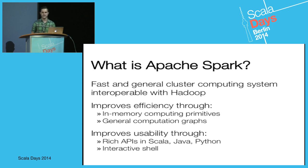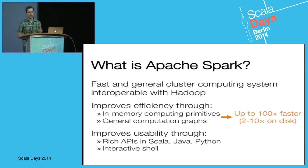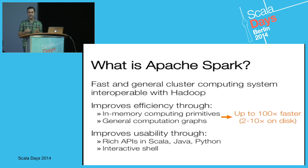The key difference, in contrast to Hadoop, is we've improved efficiency by leveraging in-memory computation primitives. This means it can actually be up to 100 times faster than typical Hadoop jobs. We also allow you to express more general computational graphs — not just map and reduce, but general DAGs of computation, which also gives us speed-ups.